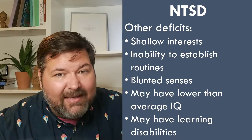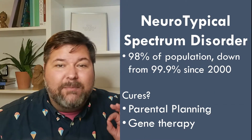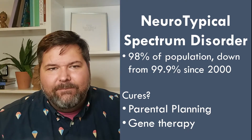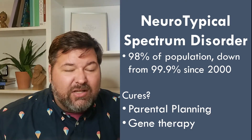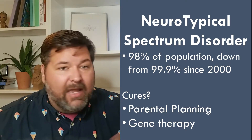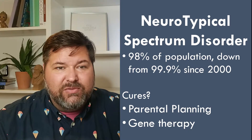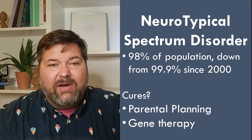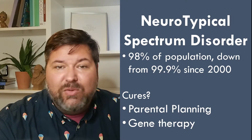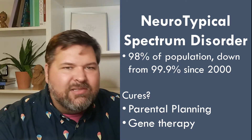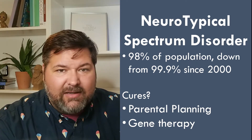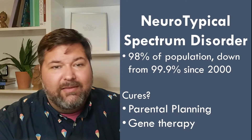Now comes the really scary part. It's so widespread that it affects up to 98% of the population. You heard me right, 98%. And the vast majority go through adulthood undiagnosed. There is some hope — this number is rapidly declining, down from 99.9% in the year 2000. Because of its serious implications for how people function in the world, I wanted to raise awareness of those suffering with neurotypical spectrum disorder, and for the challenges faced by their caregivers and families. Given advances in prenatal genetic screening and gene therapies, perhaps someday we will be able to cure this debilitating disease.